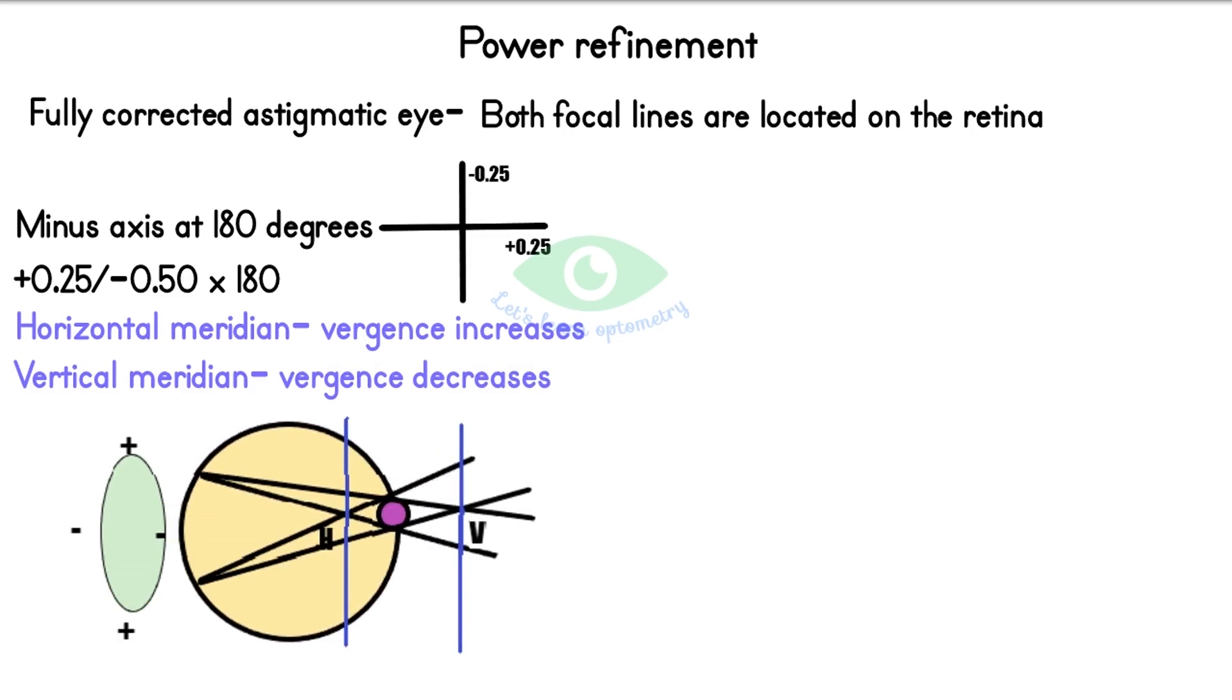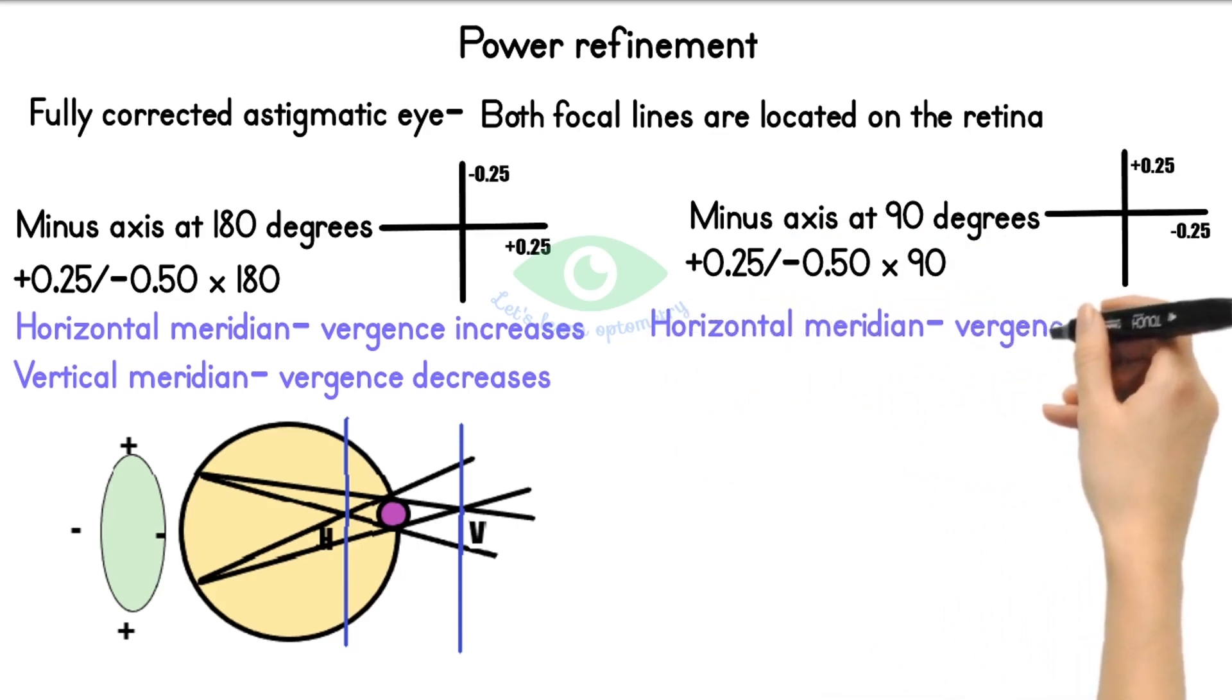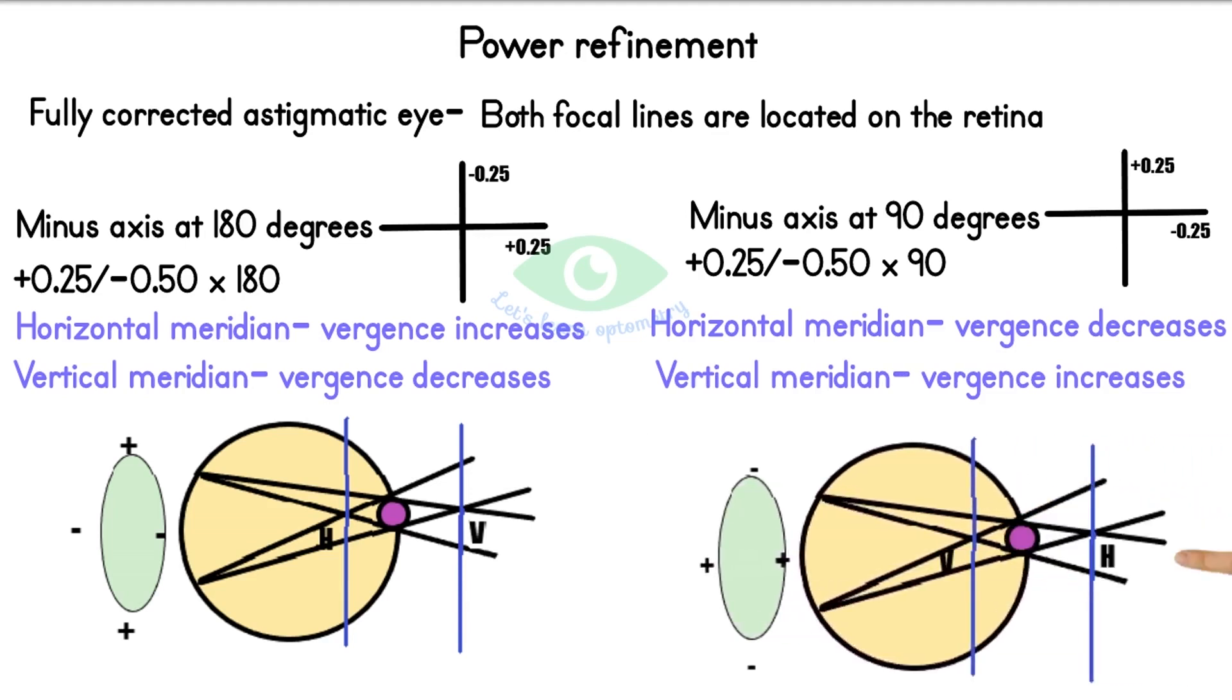Now we place the minus axis at 90 degrees. The power of JCC in that orientation will be plus 0.25 with minus 0.5 at 90. In this position, the vergence of the horizontal meridian decreases and the light rays get focused behind the retina. And the vergence of the vertical meridian increases and the light rays get focused in front of the retina.